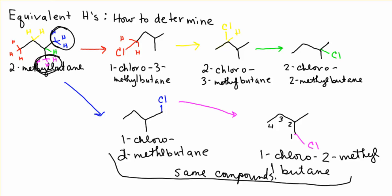So this 2-methyl-butane has 1, 2, 3, 4 sets of equivalent hydrogens.